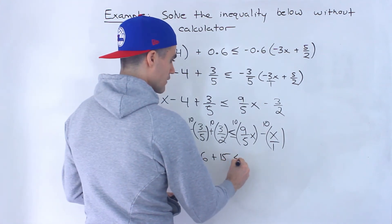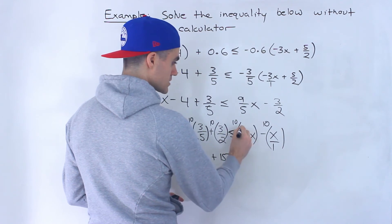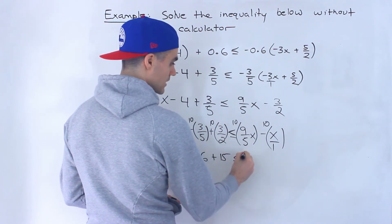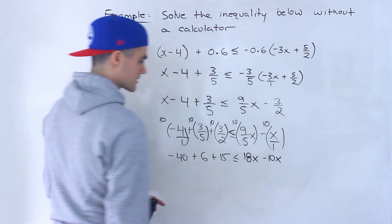And then this would be 5 goes into 10 twice. This would be times, that would be 2 times 9 is 18. And then this would be minus 10x.